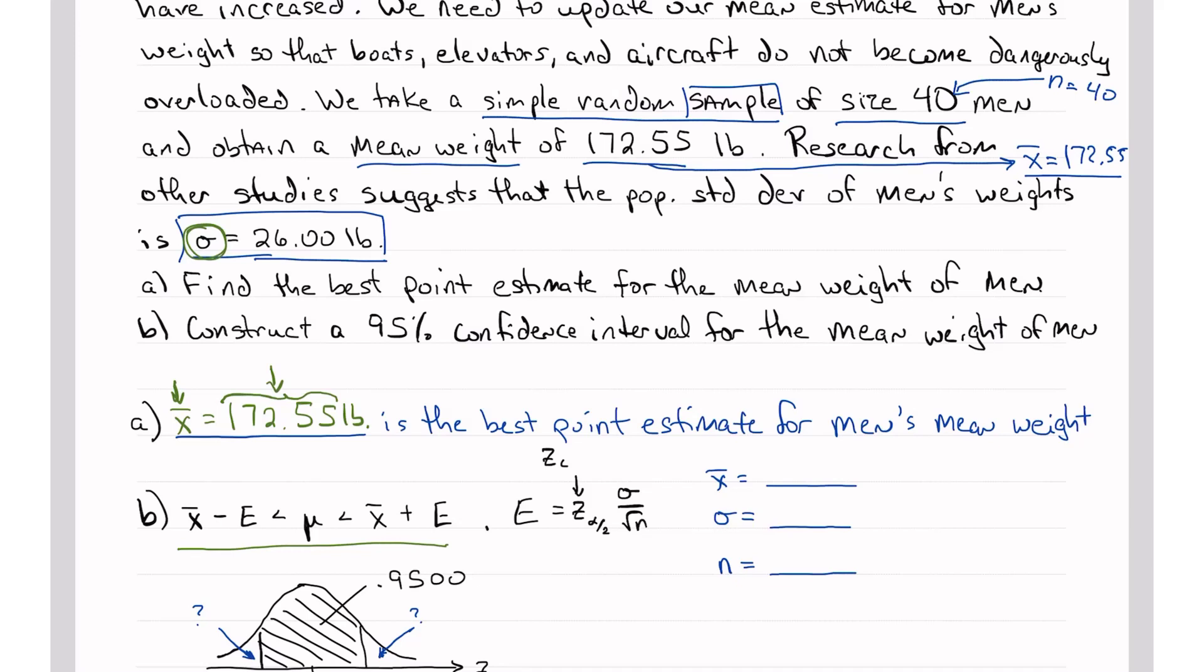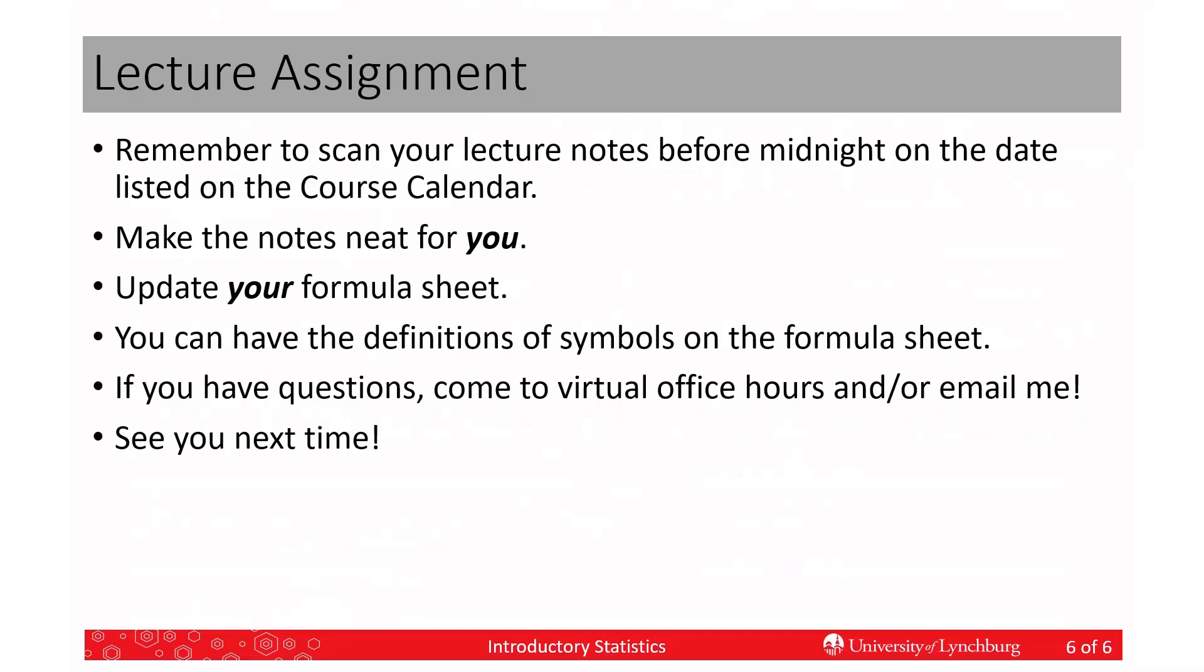So again, I will correct that on the formula sheet to try to make it less confusing. So x bar, we found out, was 172.55, sigma is 26, and n is 40. Well, that's the end of this video.